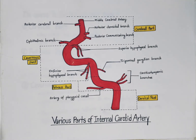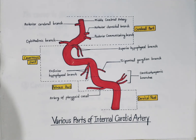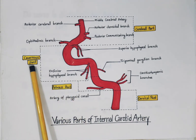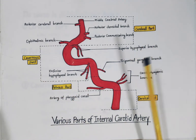This is the diagram showing the various parts of the internal carotid artery. It has mainly four parts: the cervical part, the petrous part, the cavernous part, and the cerebral part.